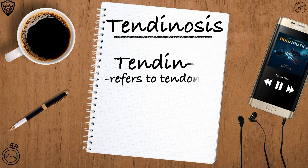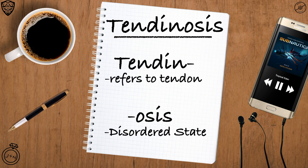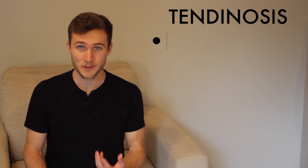Tendinosis is a buildup of small tears within a tendon over time, with inadequate healing in between bouts of tearing — degeneration of the tendon happens over time. The name comes from 'tendon' and the ending '-osis,' which often refers to disorders or abnormal states. So tendinosis literally means a tendon in a disordered or abnormal state.